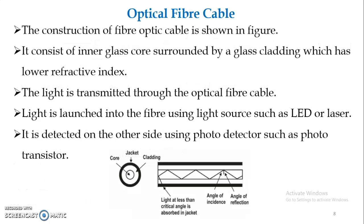Next is fiber optic cable. The construction consists of a core, with cladding on the outer side of the core, and a jacket at the outermost layer. It consists of an inner glass core surrounded by a glass cladding which has a low refractive index. Light is transmitted through the optical fiber cable — there is no flow of electric current. Light is launched into the fiber using a light source such as an LED or laser, and detected on the other side using a photo detector such as a photo transistor.